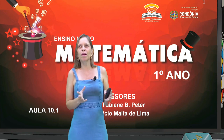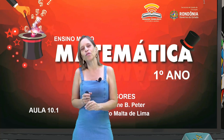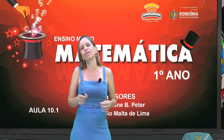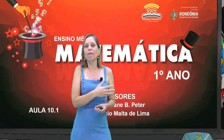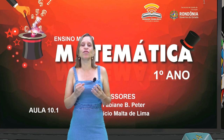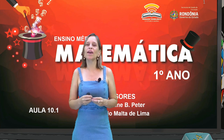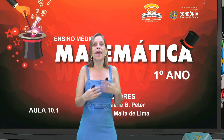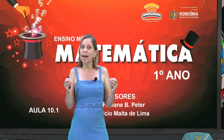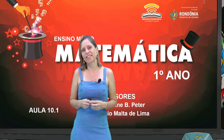O diagrama de Venn ajuda muito a solucionar problemas. Que tipo de problemas? Aqueles tipos assim: tantos gostam de sorvete de chocolate, tantos gostam de sorvete de morango e alguns gostam dos dois. Numa pesquisa, quantos foram entrevistados? A gente tem a tendência de somar todos os valores, mas isso é um equívoco porque existe a interseção — o que está em um conjunto e também no outro — e a gente tem que fazer um certo desconto no cálculo.